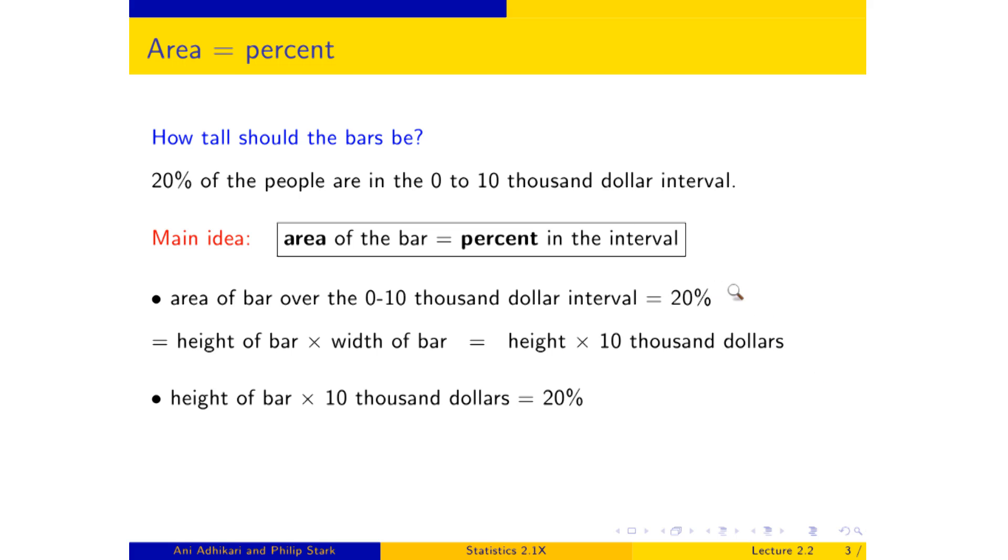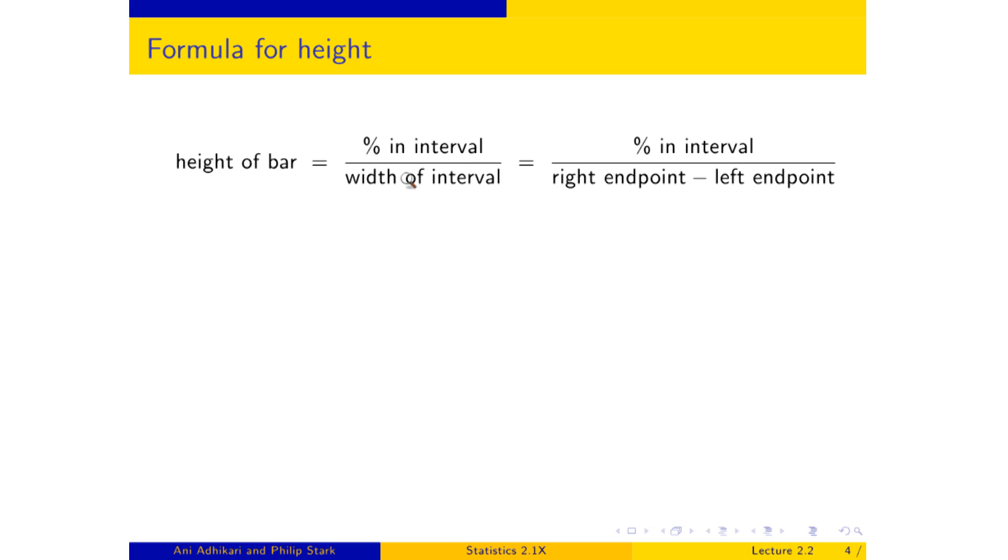So what have we learned from this? We have learned from this that this 20% is equal to the height that we're trying to find times $10,000, and so divide through by $10,000, and the height that you are trying to find is 20% divided by $10,000, which is 2, numerically, with units of percent per $1,000. And this is how you find the height of the bar that you are trying to draw. You take the percent in your interval, and you divide by the width of the interval. And if you want a formula totally nailed down, it's the percent in the interval divided by the right end, the large end of your interval minus the small end. And here you have your first formula. There aren't going to be many formulas in this class, but this is certainly one of them. This is how you calculate the height of the bar. And so, well, if you can do it for one bar, as we said, you can do it for them all.